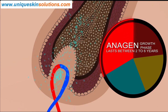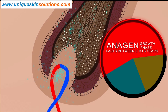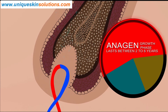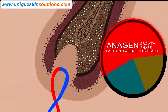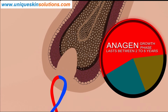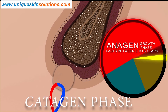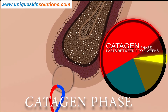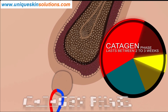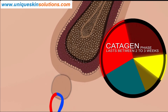Up to 85% of hairs in a normal scalp are in this stage. After 2 to 6 years of the anagen phase, the hair follicle merges into the catagen phase. In this phase, matrix cells cease their activity and hair growth stops. The base of the hair shaft migrates away from the papillary blood supply.